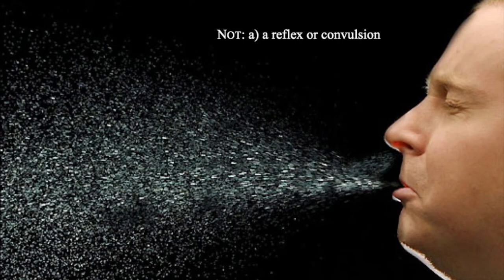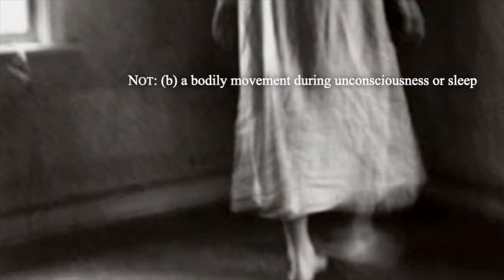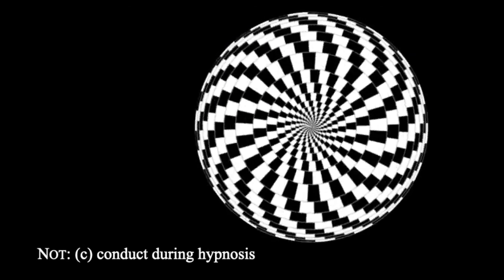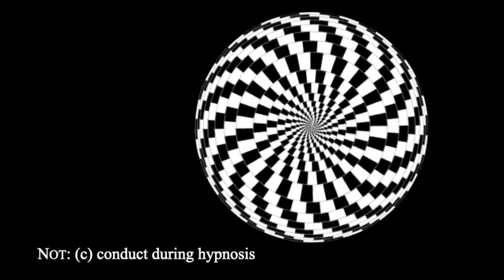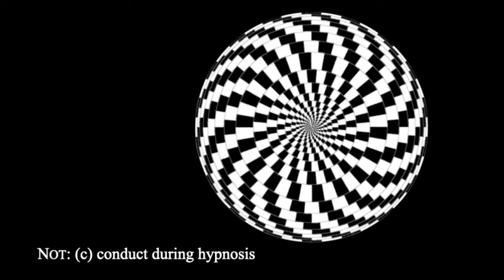A reflex or convulsion — like a sneeze or a spasm — is a bodily movement, but it is not a voluntary act. Similarly, a bodily movement during unconsciousness or sleep is not a voluntary act.